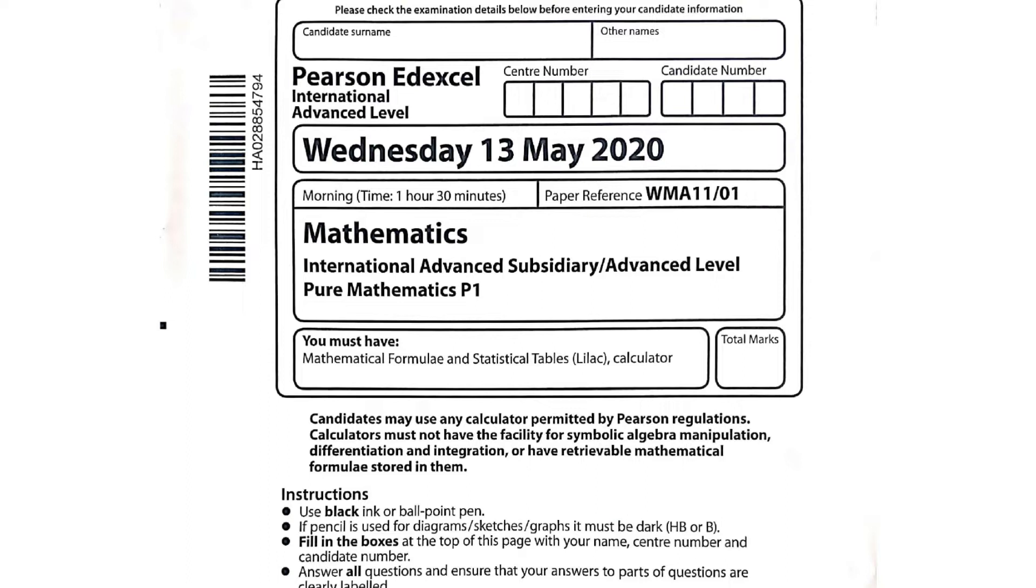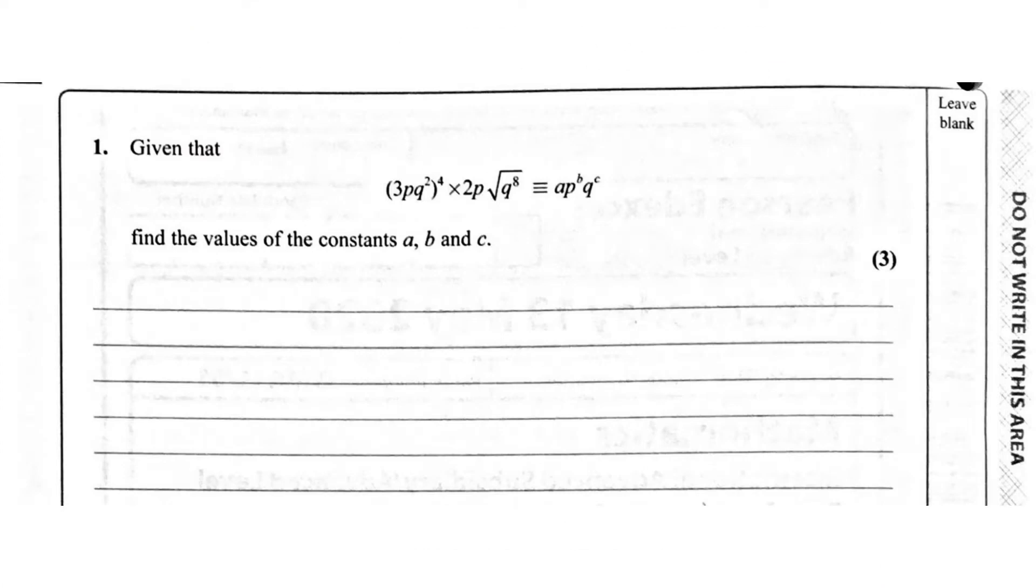This question paper has 9 questions. Question number 1, given that (3pq²)⁴ × 2p√(q⁸) equals ap^b q^c, find the values of the constants a, b and c. The question carries 3 marks.